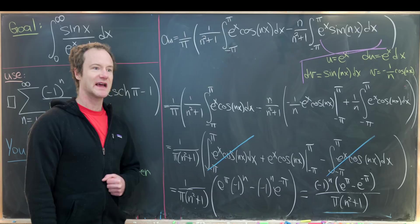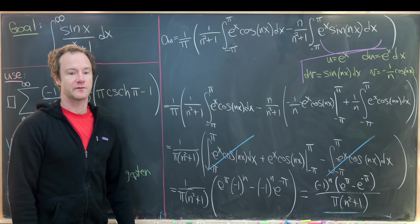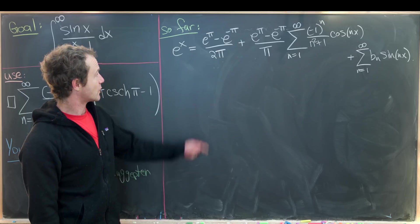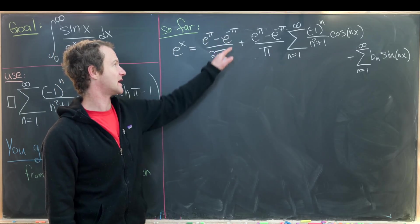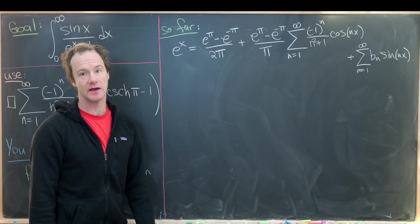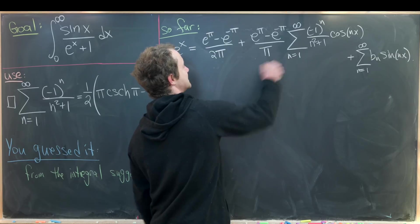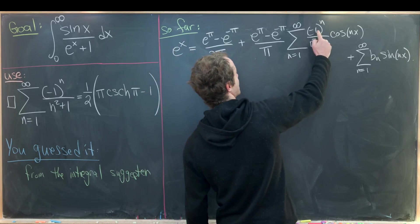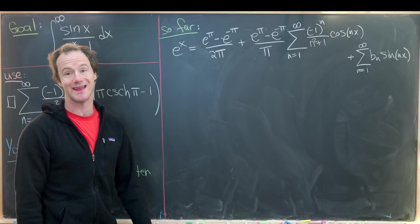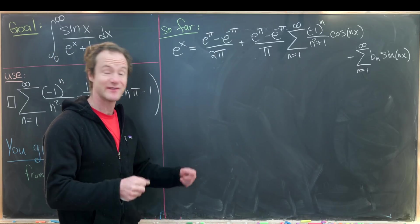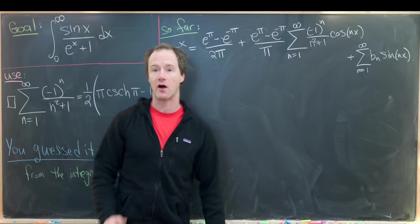So the Fourier expansion of e to the x is: e to the π minus e to the minus π over 2π, plus e to the π minus e to the minus π over π times the sum — which is alternating with coefficients minus 1 to the n over n squared plus 1 times cosine nx — plus the sine term, which we have not calculated and will not need.